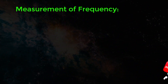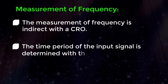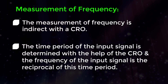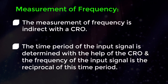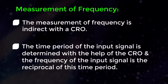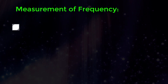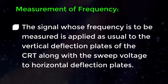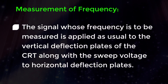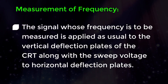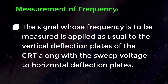Measurement of frequency. The measurement of frequency is indirect with the CRO. The time period of the input signal is determined with the help of a CRO, and the frequency of the input signal is the reciprocal of this time period. The signal whose frequency is to be measured is applied as usual to the vertical deflection plates of the CRT along with the sweep voltage to horizontal deflection plates.